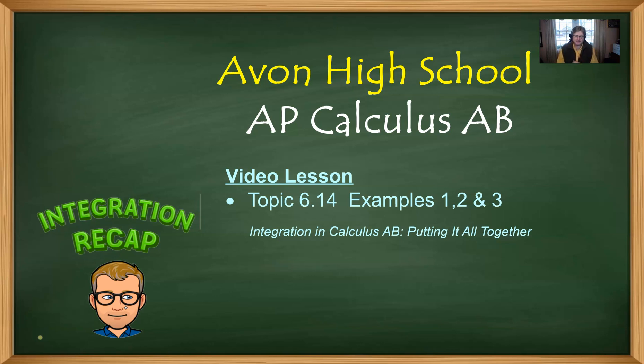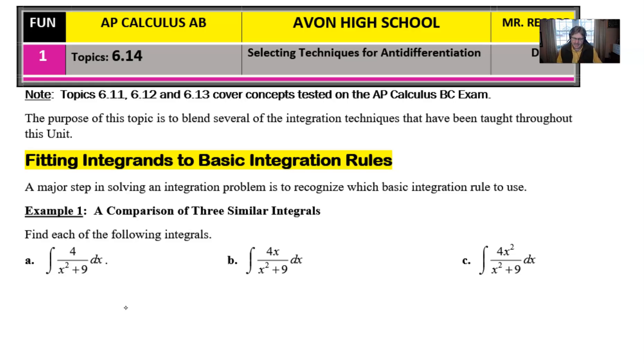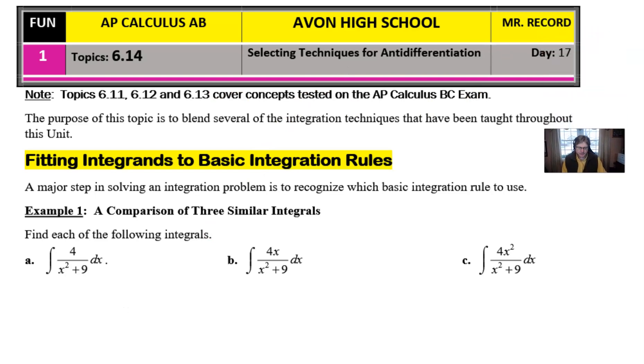And even though 6.14 follows a few topics that are BC related, I'm focusing on the way that I approach this particular lesson to be geared towards students who are in the AB course. So let's take a look at our integration recap. And as I said before, just so that you're aware, topics 6.11, 12, and 13 cover topics that are tested on the BC exam. So if you're an AB student at Avon High School and you're a junior, you will cover these topics sometime probably towards the beginning of your course next year as a senior in my BC class.